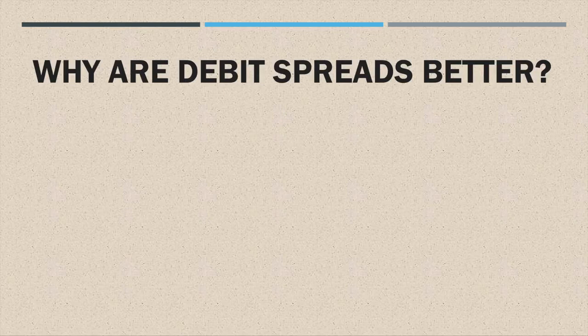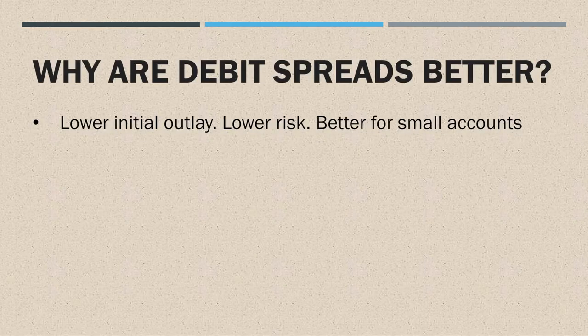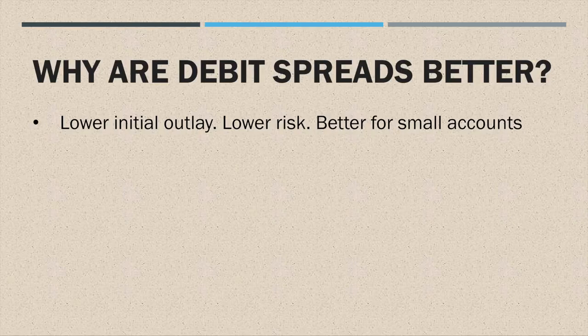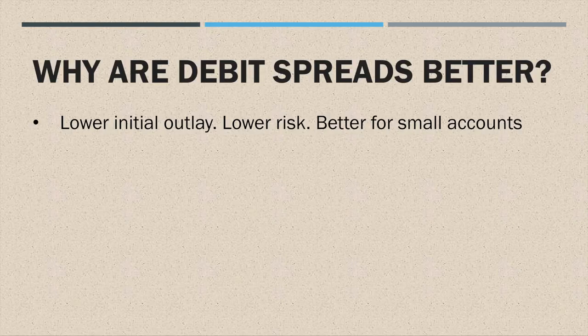Why are debit spreads better than buying calls or puts? Lower initial outlay means lower investment, and lower investment means lower risk. Whatever money you're putting up is the maximum you can lose. In the original example, buying a call option cost $15,000, but buying the same call spread cost only $500. So you're risking $15,000 in the first case versus $500 in the second.